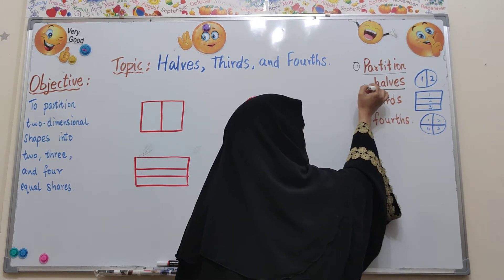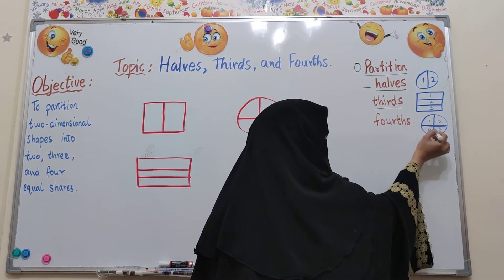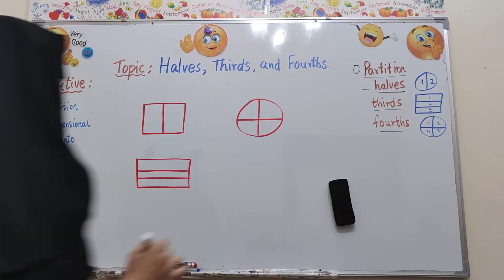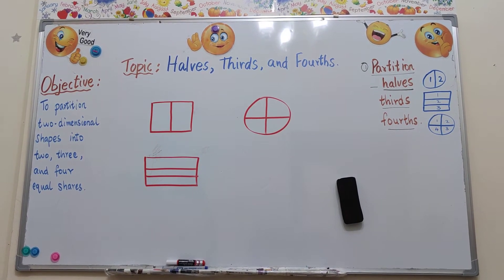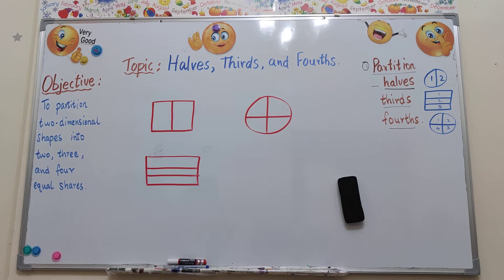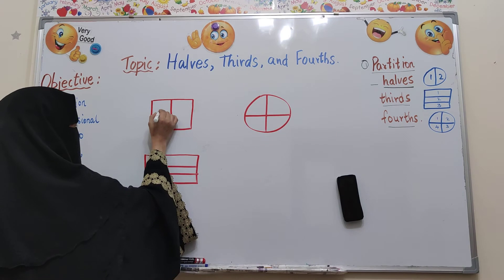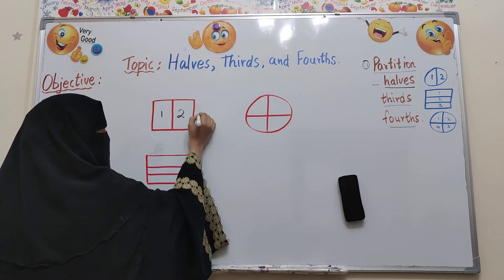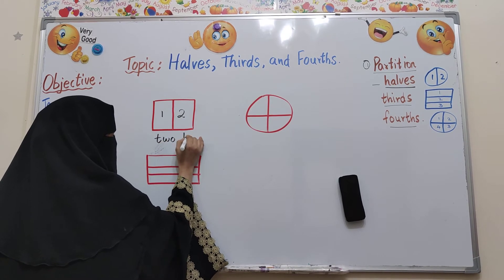That's why we are saying this as halves, this as thirds, and this one as fourths. Now let's see a few examples. We have to write down whether it is two halves, three thirds, or four fourths. The first one: how many equal parts do you have here? Two. So that means I have to write it down as two halves.